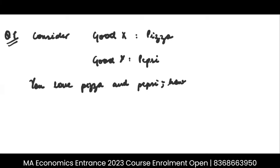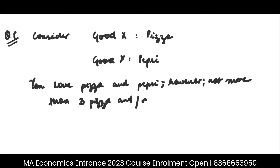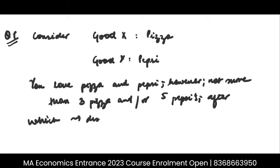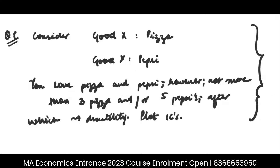However, not more than three pizzas and/or five Pepsis. After which these goods give you disutility. My question to you is: plot the indifference curves. This is a very important question — you will get questions with very different kinds of ICs in your DSE, IGIDR, and other exams. Please pause the video and try it once.